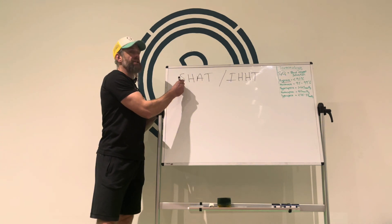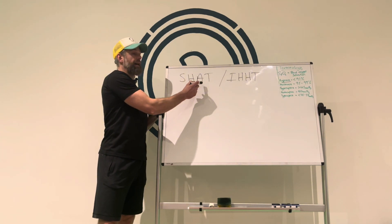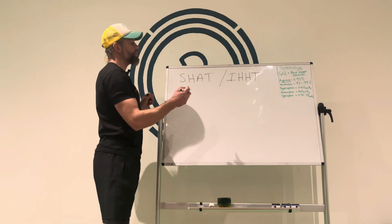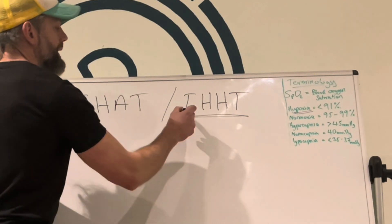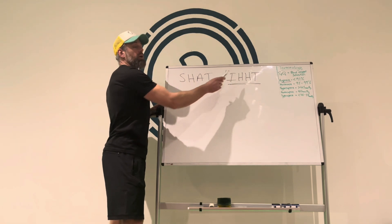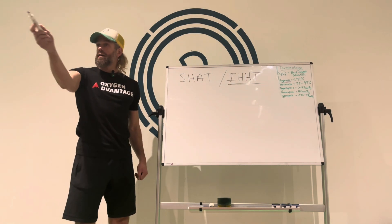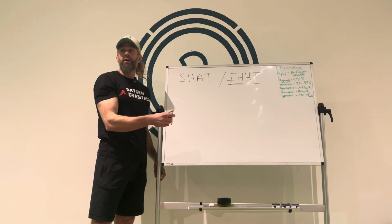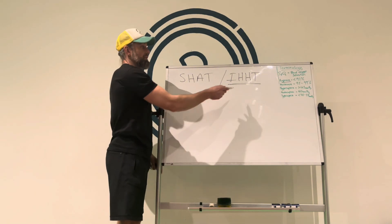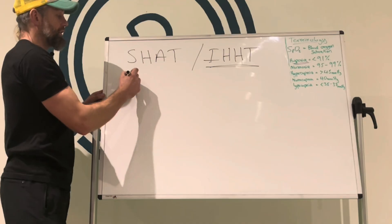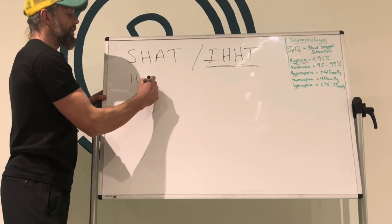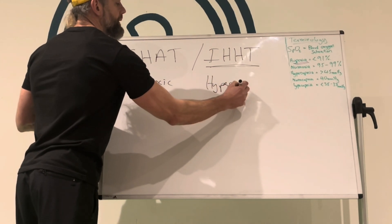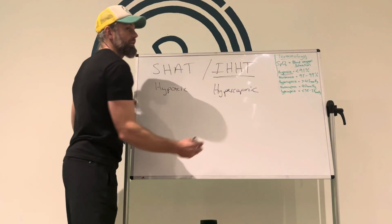We've talked a lot about CHAT — simulation of high altitude training. It will often get called in the research 'intermittent.' What could the H's stand for? Hypoxic. And the other H stands for hypocapnic training. So hypoxic, hypocapnic training.